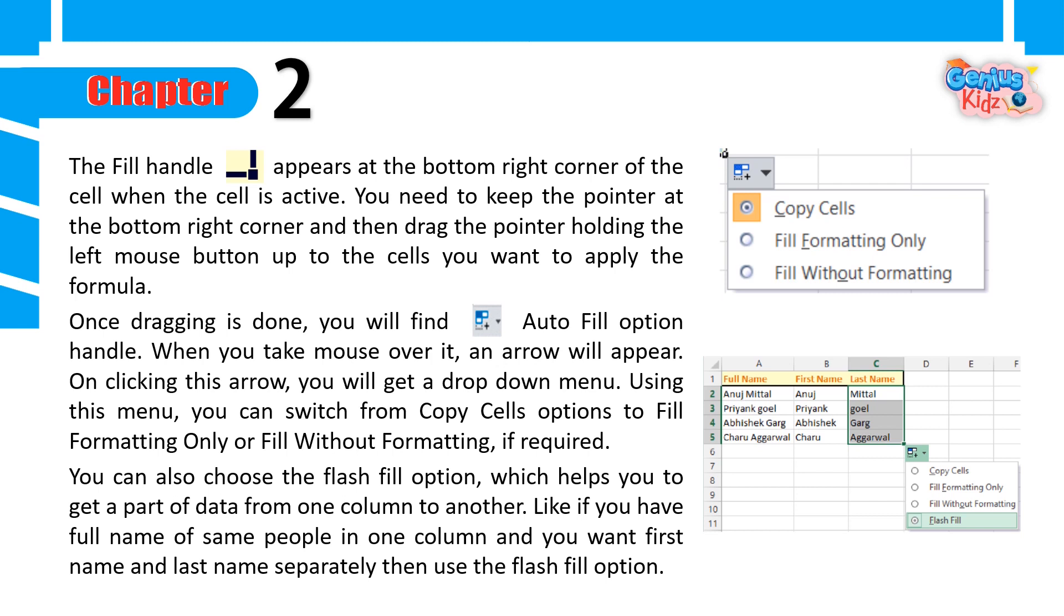Once dragging is done, you will find auto fill option handle. When you take mouse over it, an arrow will appear. On clicking this arrow, you will get a drop down menu. Using this menu, you can switch from copy cells options to fill formatting only or fill without formatting, if required. You can also choose the flash fill option, which helps you to get a part of data from one column to another. Like if you have full name of some people in one column, and you want first name and last name separately then use the flash fill option.